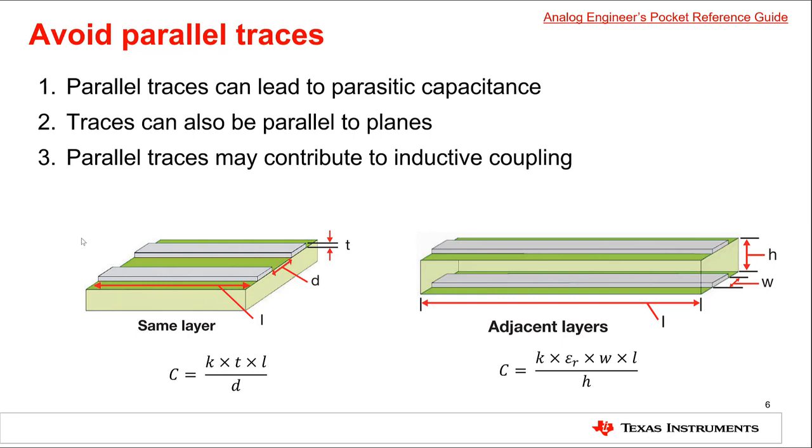Another important layout technique is to avoid parallel traces when possible. Remember that traces on a PCB are metallic, and parallel metallic plates with an insulator in between form a capacitor. So when two traces run in parallel, either on the same plane or on adjacent planes, they create a parasitic capacitance. This can lead to the unwanted coupling of signals from one trace into another.